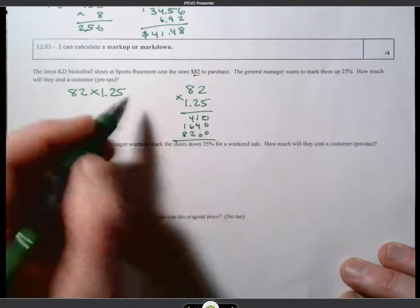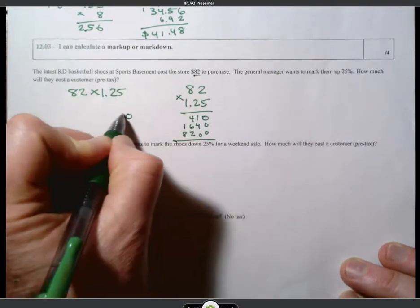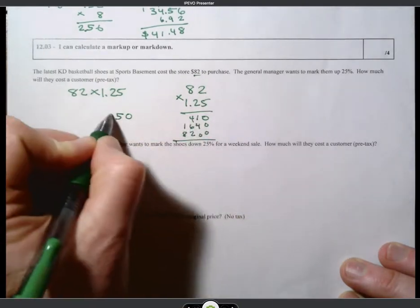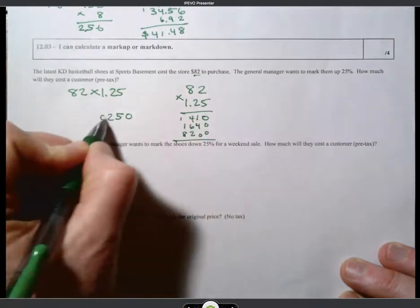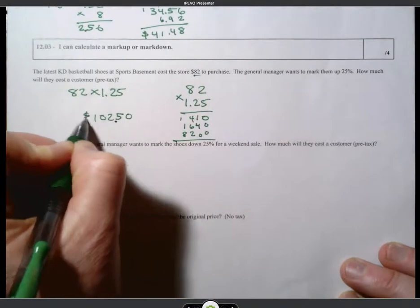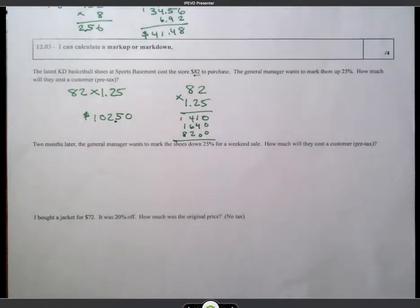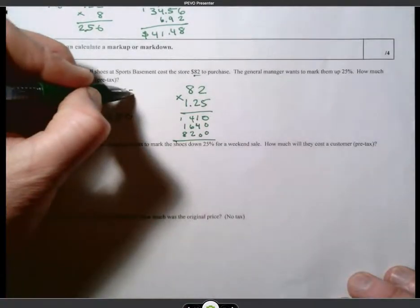Woof! Running out of room here. If I add all those, I get a 0, 5, 10, 12, 1, 8, 9, 10. $102.50. Okay?